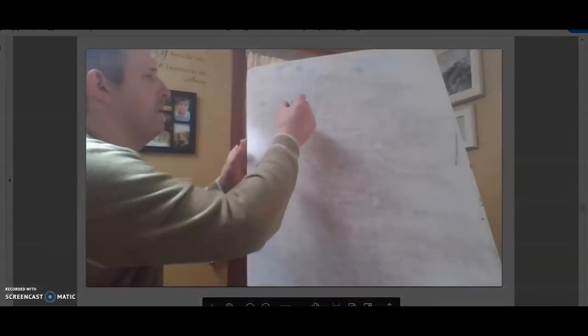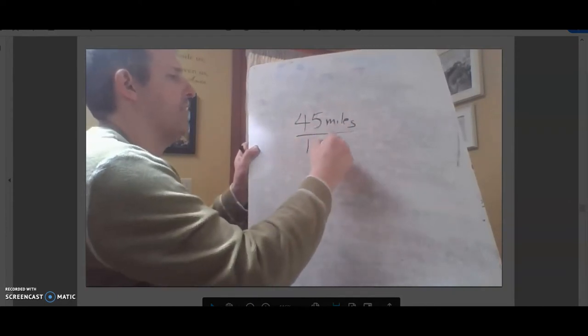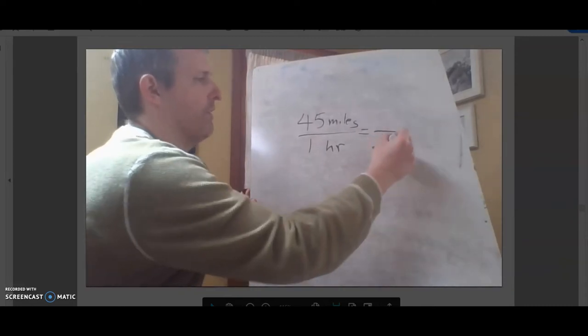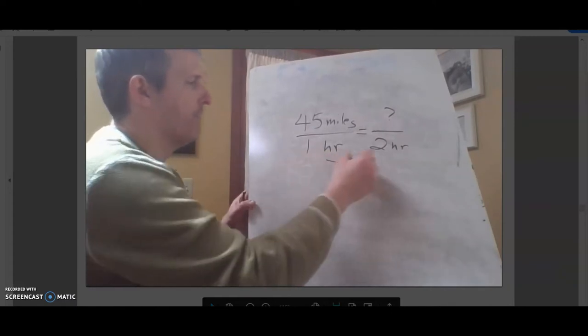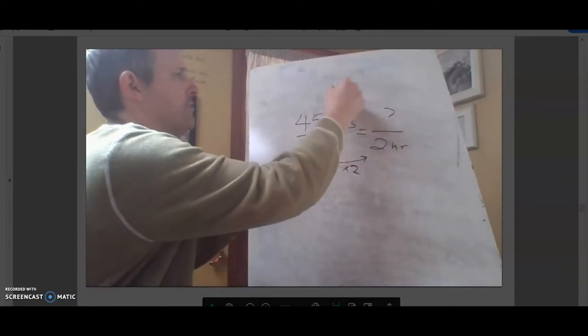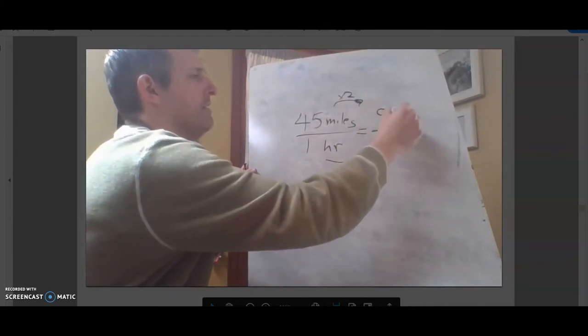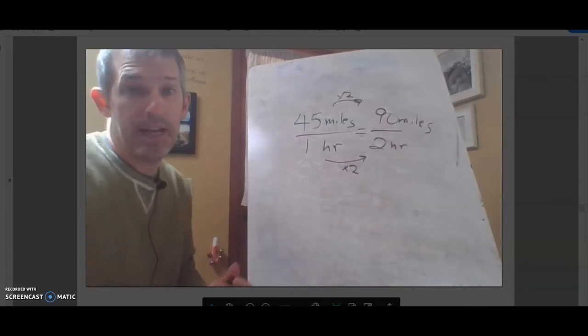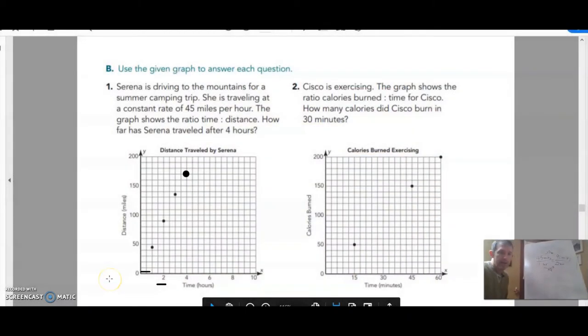Since we know that it's 45 miles for one hour, I could ask myself, in two hours, how many miles would that be? If I'm going to scale up, it'd be times two. So it'd be times two up here. So my answer there would be 90 miles. If you remember, our original problem is how far has Serena traveled after four hours?